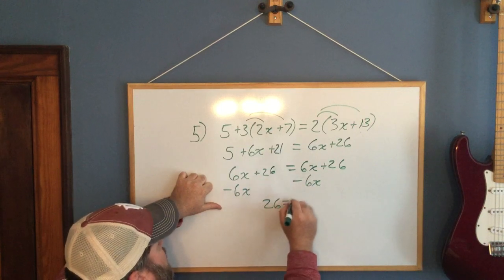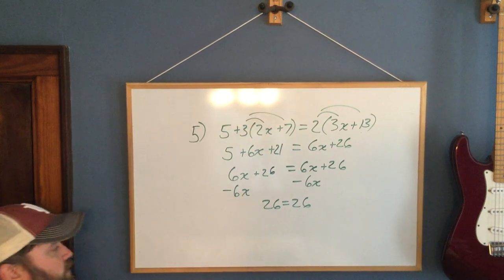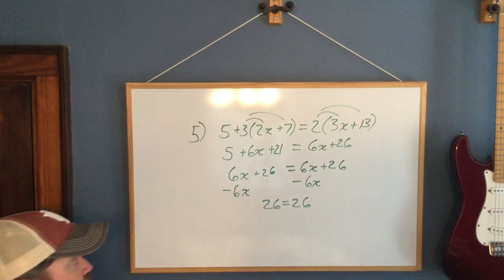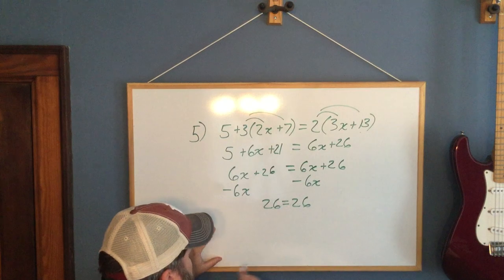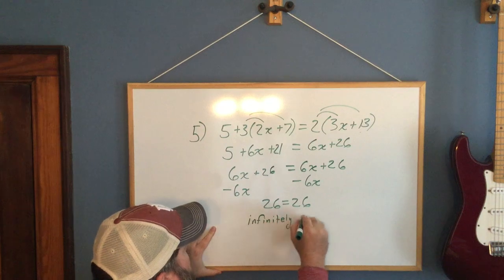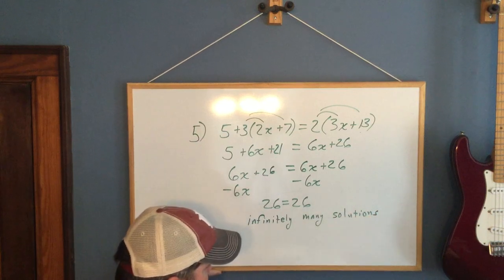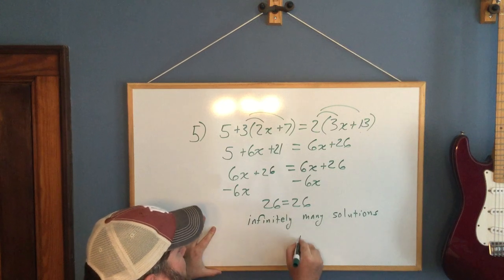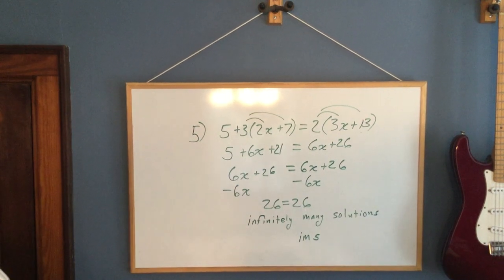So this time my variable disappeared, but instead of having a false statement, I have a true statement. So when it was a false statement, it meant no numbers were a solution. This means every real number is a solution. All real numbers is what I prefer, but what we taught all year was infinitely many solutions. Because that's the way I learned it. Said it. We didn't have to take iLearn this year. Thank God. Infinitely many solutions or on tomorrow's homework, you can put in IMS and it will also count it correct.